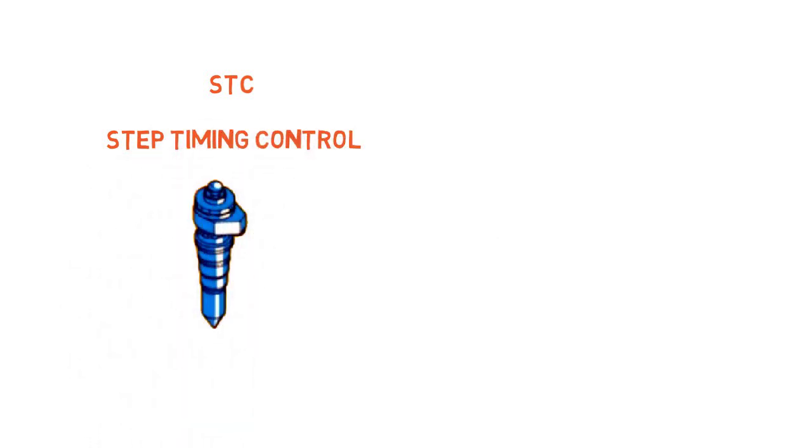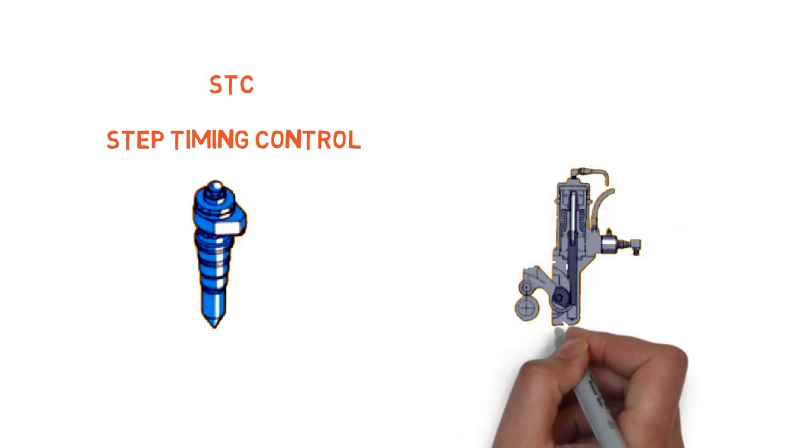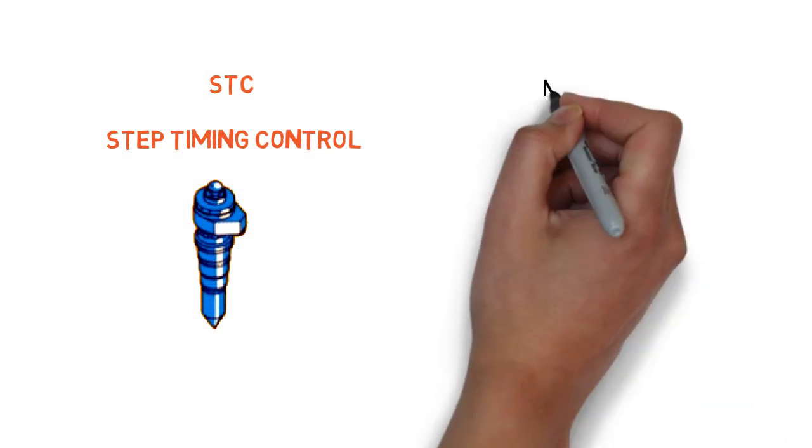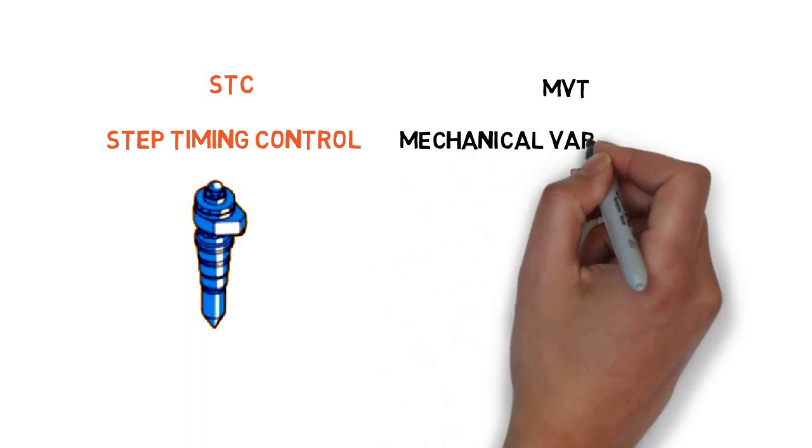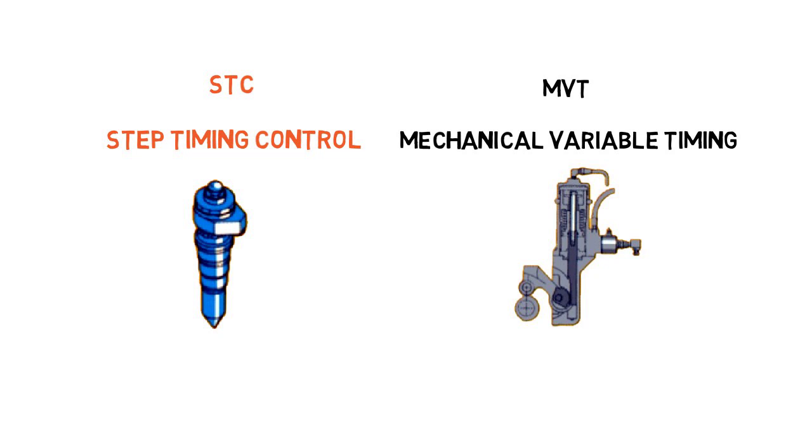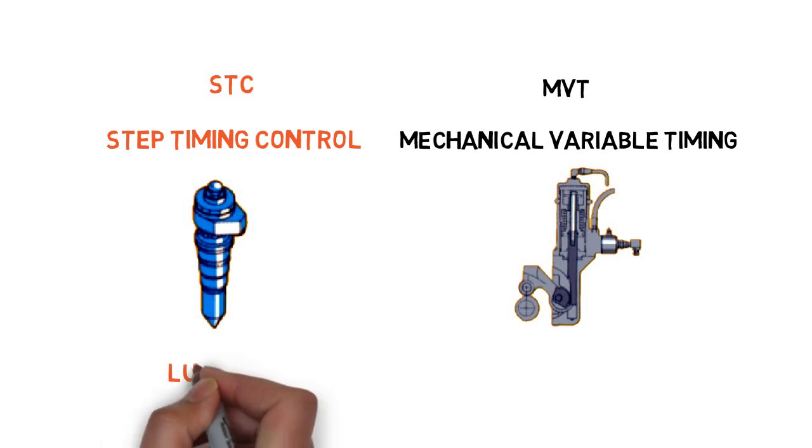The system accomplishes the same results as Mechanical Variable Timing, or MVT. One of the main differences is that STC is activated by lube oil, while MVT is activated by air.